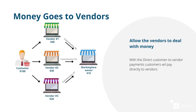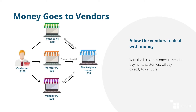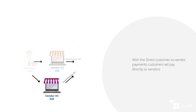MultiVendor Plus and Ultimate have a functionality called Direct Customer to Vendor Payments. It transfers the money for orders from customers directly to the vendors. For example, if a customer wants to buy three products from three different vendors, they have to make three payments.